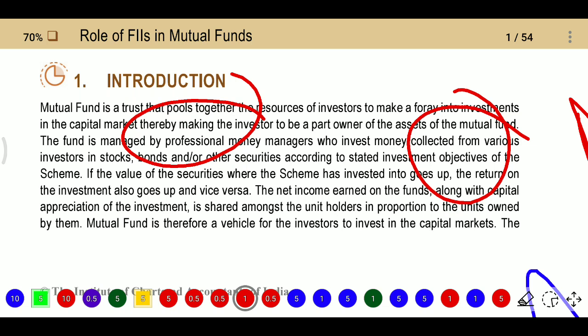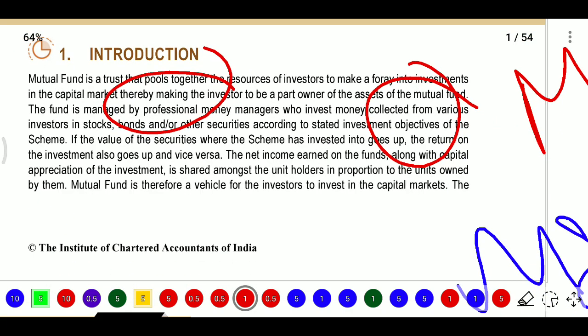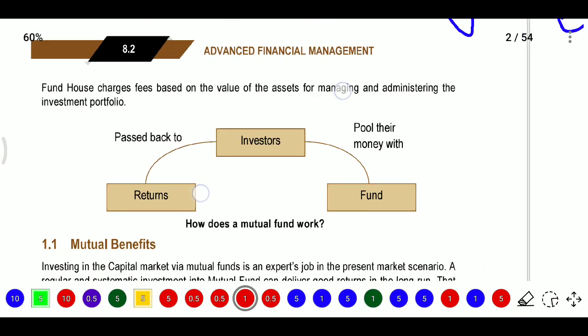They state the objectives of the fund - whether they will invest in real estate, infrastructure, debt, or debentures - and invest accordingly. If the value of securities where the scheme has invested goes up, returns go up, and vice versa. The net income earned on the funds along with capital appreciation is shared among unit holders in proportion to the units owned by them. Mutual fund is therefore a vehicle for investors to enter the capital market.